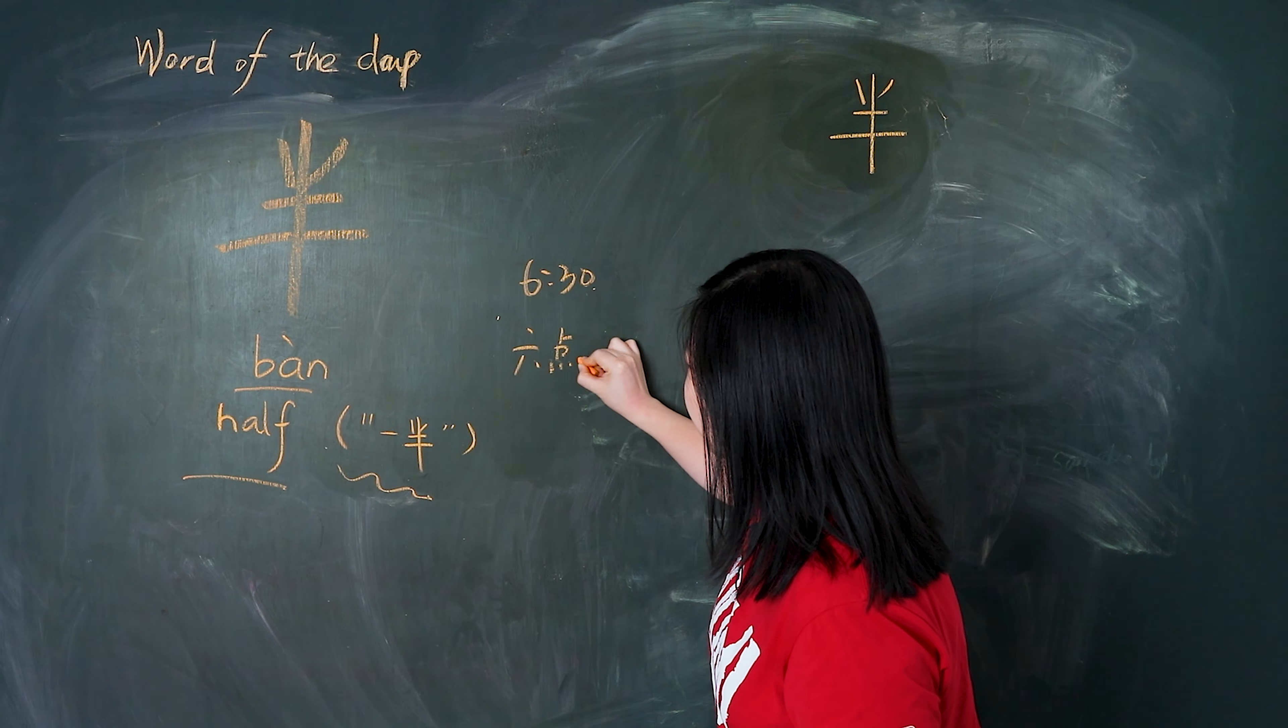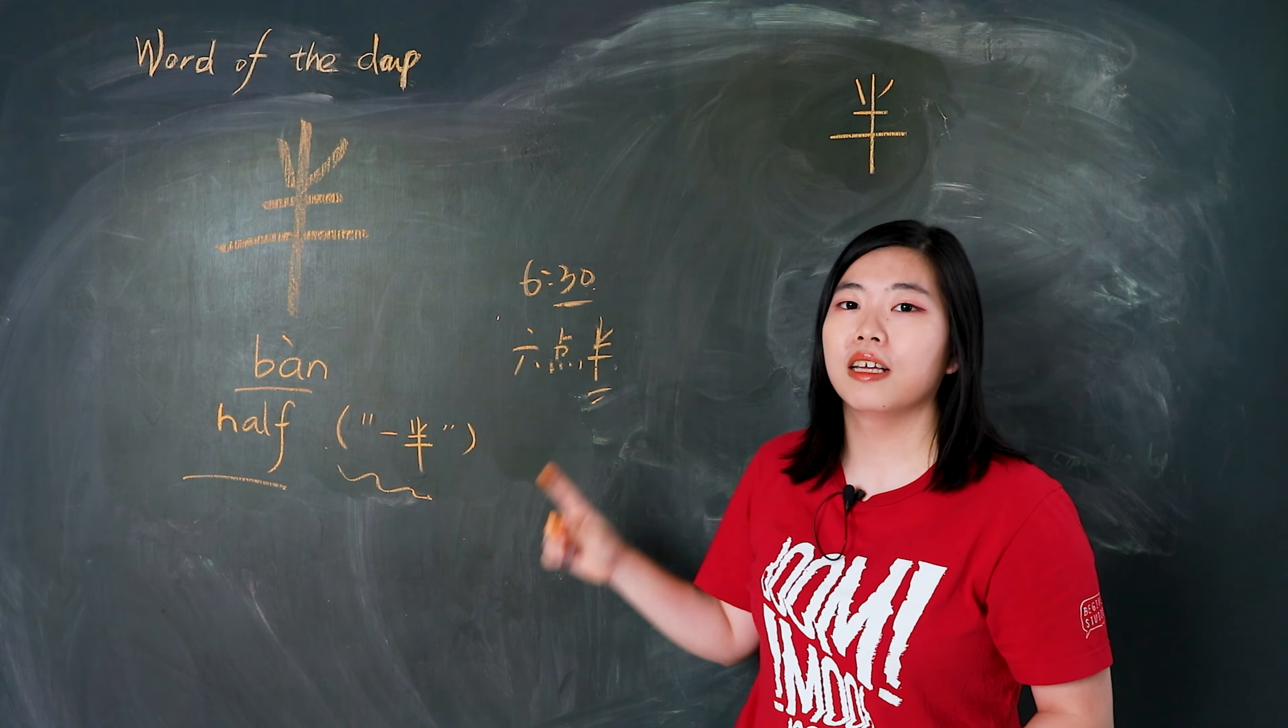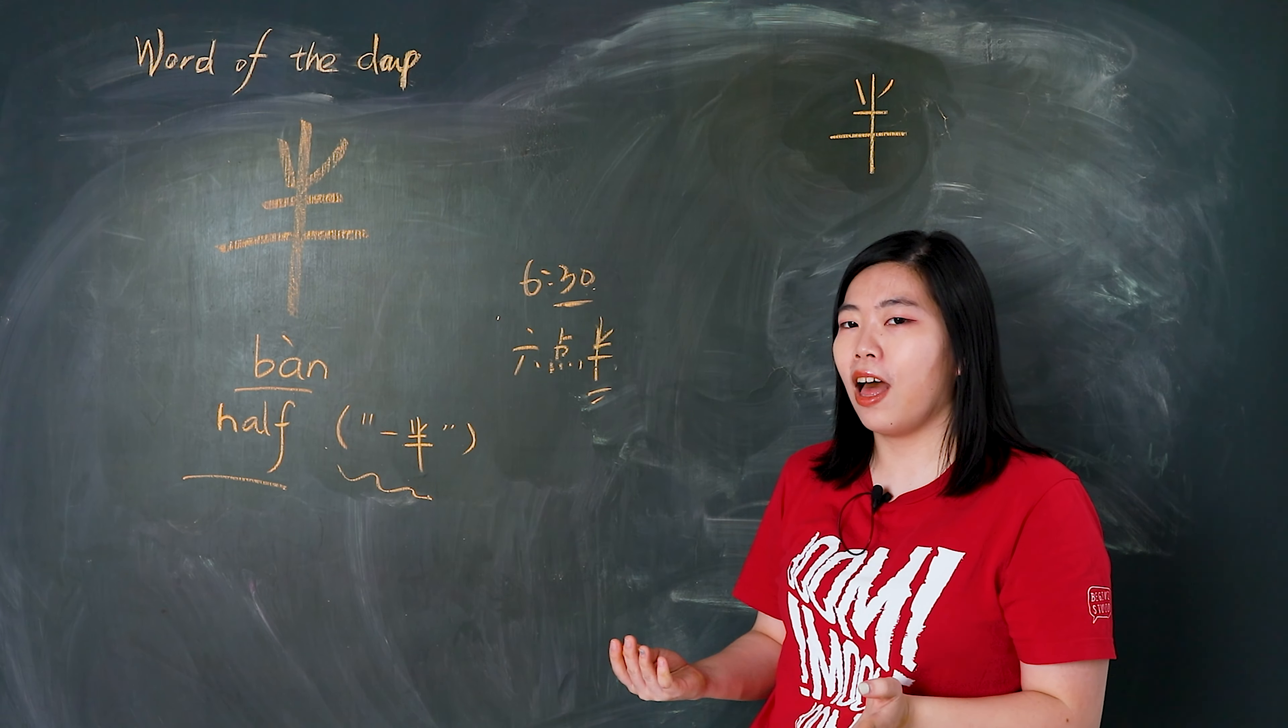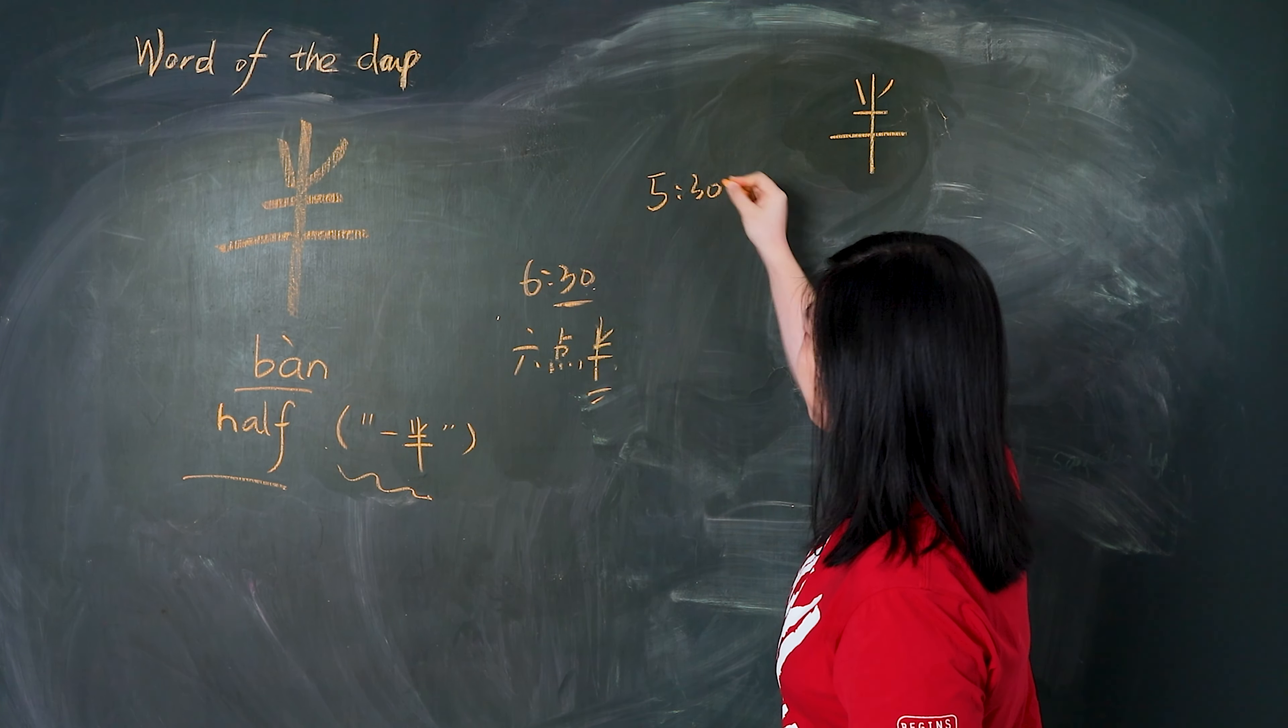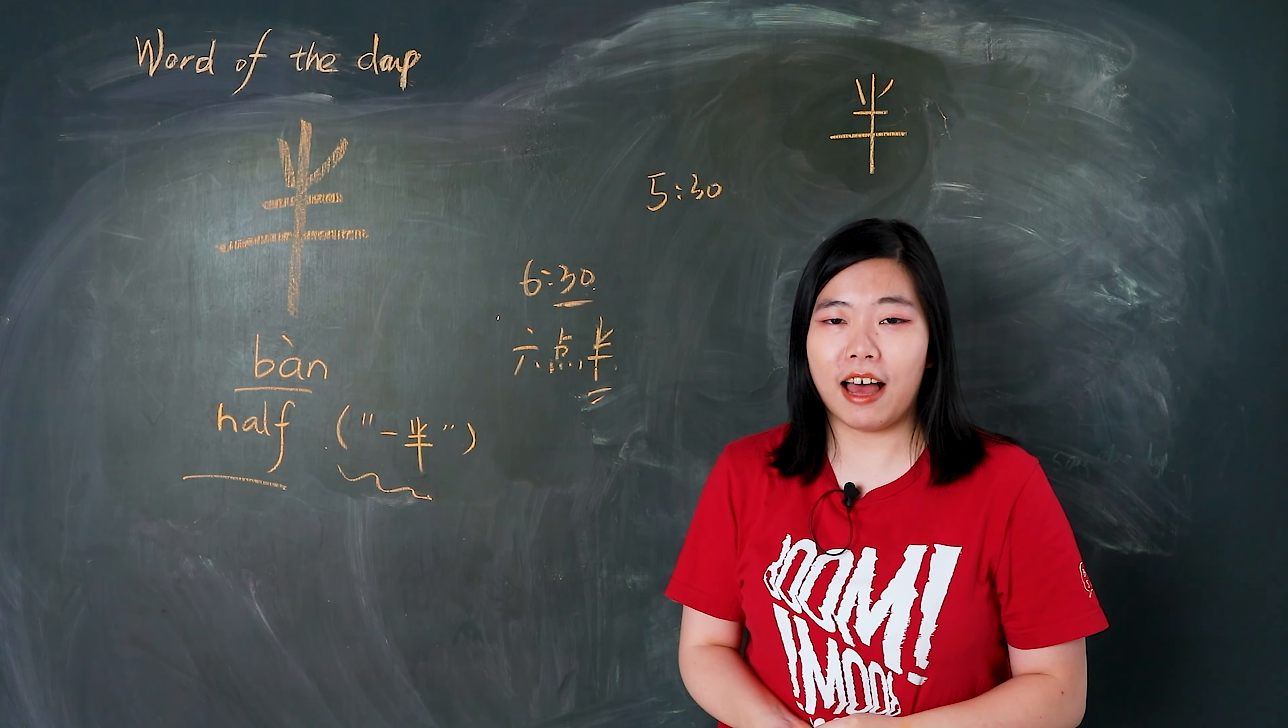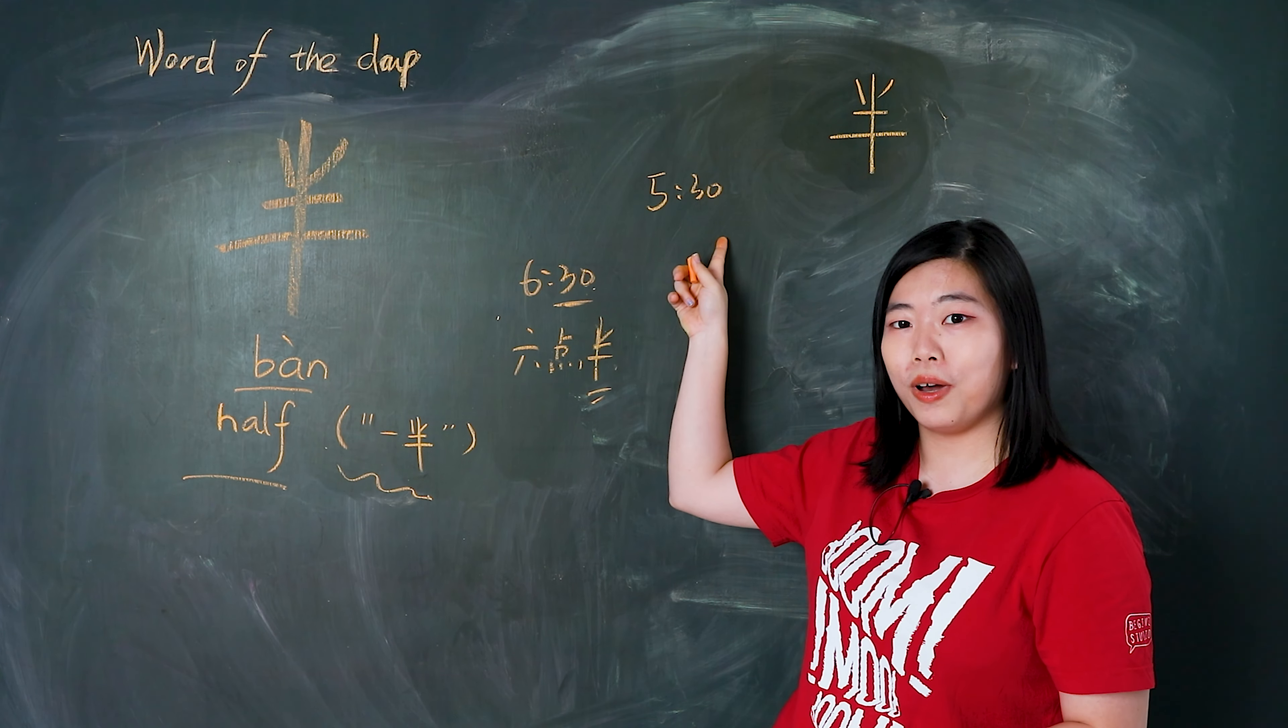We can say 六点半. 六点半, 六点半, 六点半. 在下方评论区告诉我 5:30 要怎么再用中文来表达呢？